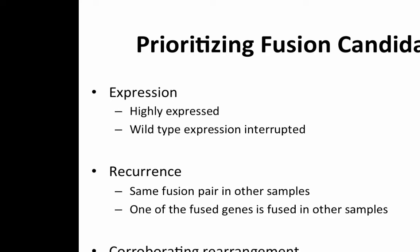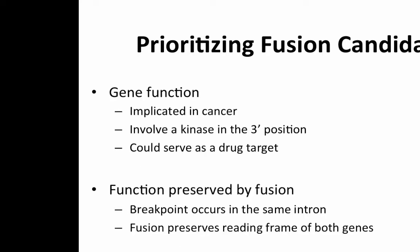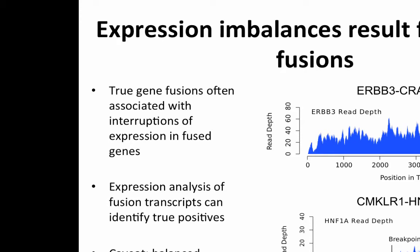When prioritizing real gene fusions, we can look at expression — whether the fusion is highly expressed, particularly if the 3' gene is highly expressed, as that's often the one carrying the function in the fusion gene. We can look at recurrence — whether it's seen across multiple samples. We can look for a corroborating rearrangement if we have any genomic information. We can look at the function of the 3' gene — is it a kinase, could it serve as a drug target? We can also look at whether the function is preserved by the fusion: whether the breakpoint occurs within an intron and whether it preserves the reading frame of both genes.